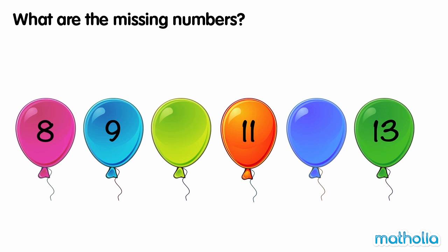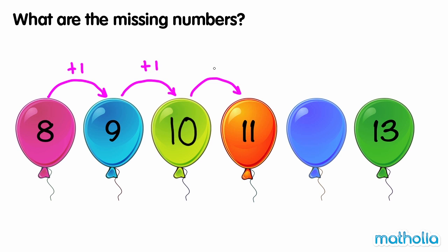What are the missing numbers? 8 plus 1 is 9, 9 plus 1 is 10, 10 plus 1 is 11, 11 plus 1 is 12. In each step the numbers go up by 1. The missing numbers are 10 and 12.